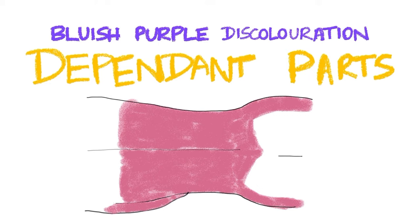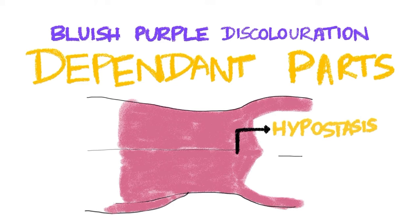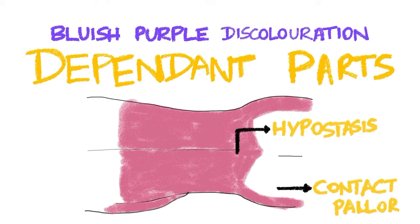Consider a person who died in the supine position with their back on the ground. There will be hypostasis or post-mortem staining of blood pooling in the dependent parts — the back. However, certain white areas will not be stained; these are called contact pallor, because bony prominences and elevations compressed against the surface will not undergo post-mortem staining and will appear pale.